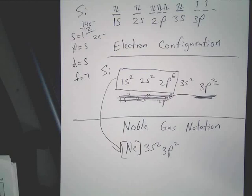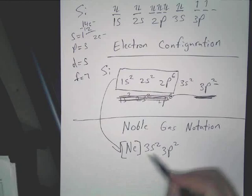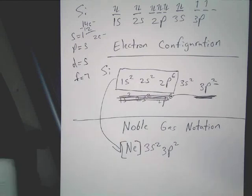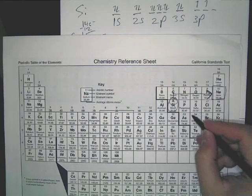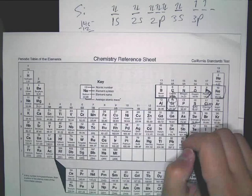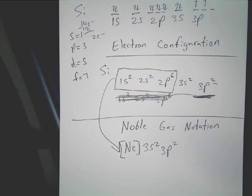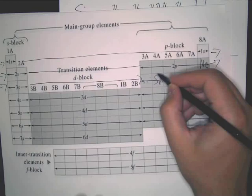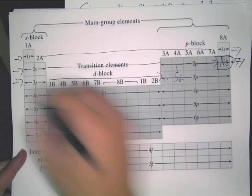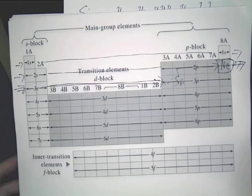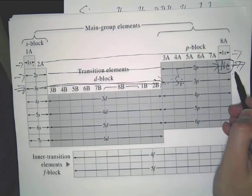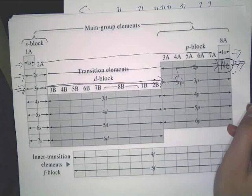Student: Is it always the first noble gas you hit going up and over? Always — you go up and over to the last one. So for silicon, you start with neon in brackets, then you figure out what comes after neon to get to silicon. It's like you just start after the noble gas instead of starting at 1s. That's all it is — just what's after the noble gas until you get to the element. If you were doing something like selenium, it would be argon in brackets instead.